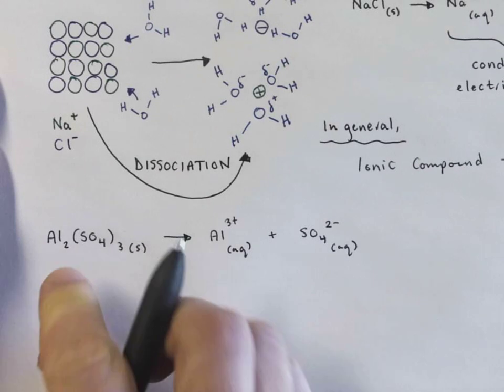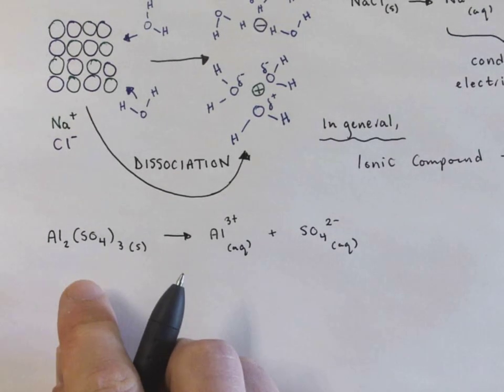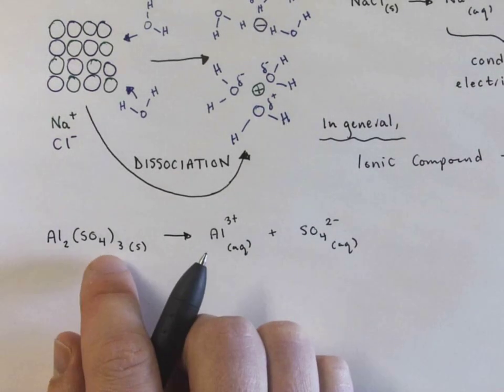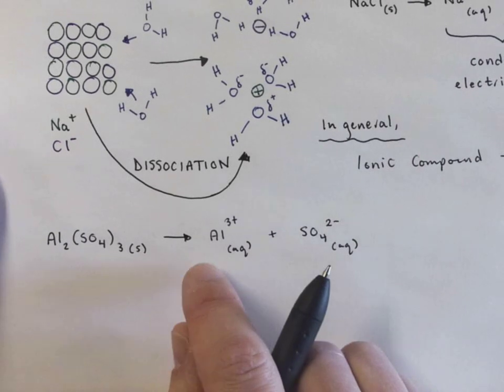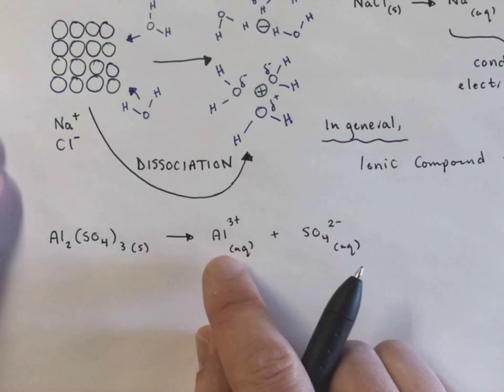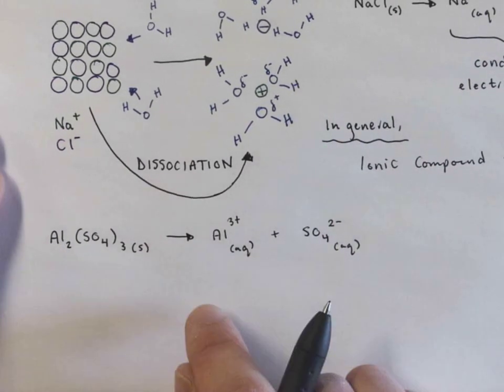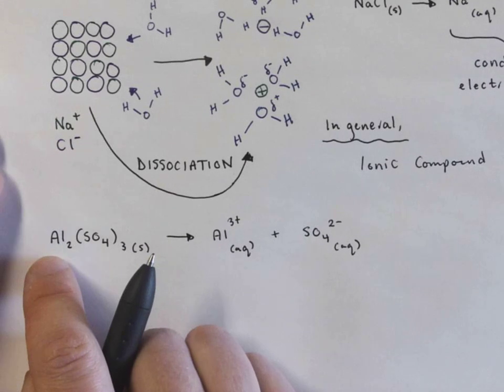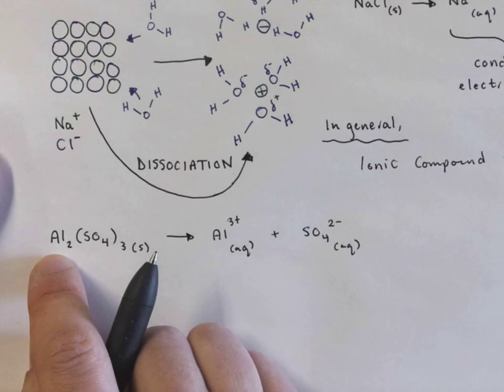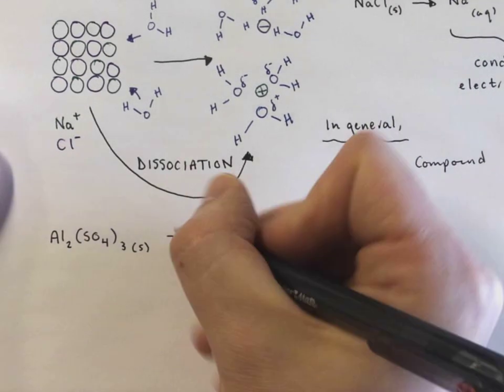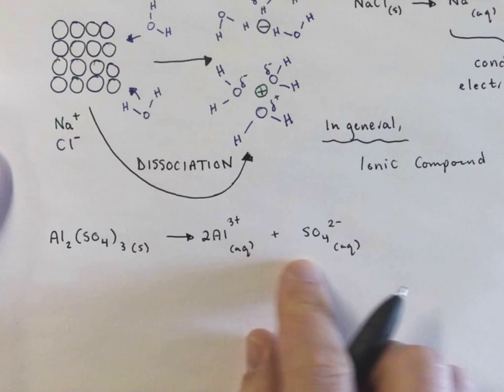So I'm going to look at this compound and see what positive ion and what negative ion went into building this compound. And when I separate it, I'm going to write those ions separately. So this says I have two aluminum ions part of this compound. That means I need to have a two here. I need to make sure that this is balanced.